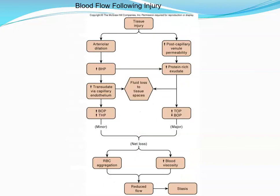This flow chart summarizes what happens after tissue injury. Tissue damage causes vessels to dilate, increasing blood pressure, which causes fluid to escape into the tissue spaces. We also see increased permeability, which allows proteins to escape and contributes to fluid loss. Over time, this reduces blood flow and could even result in stoppage of flow.